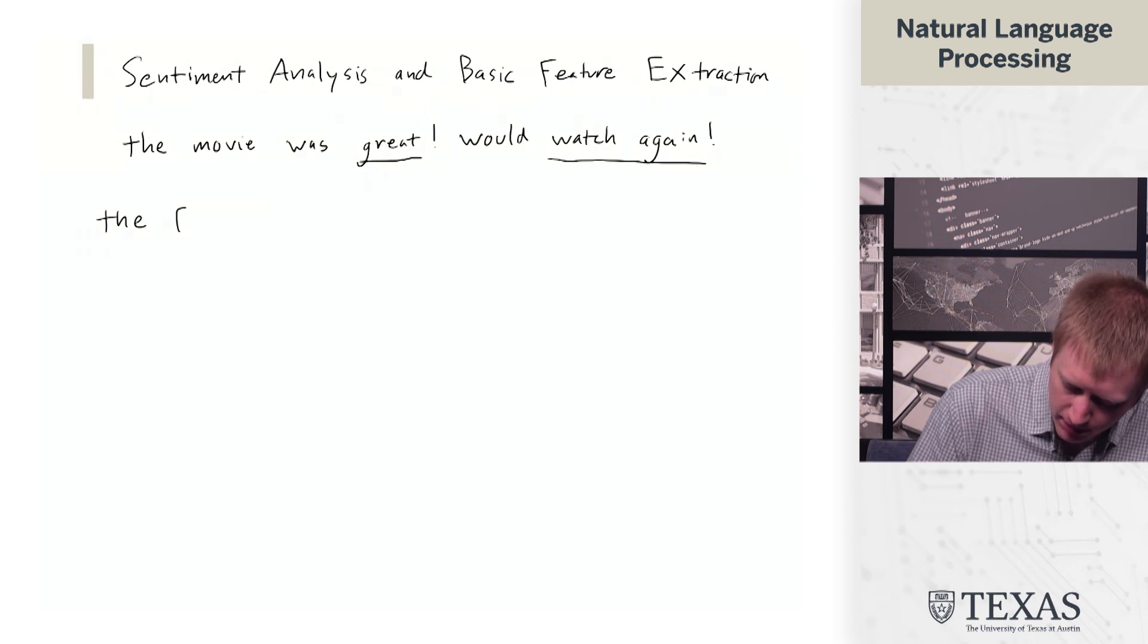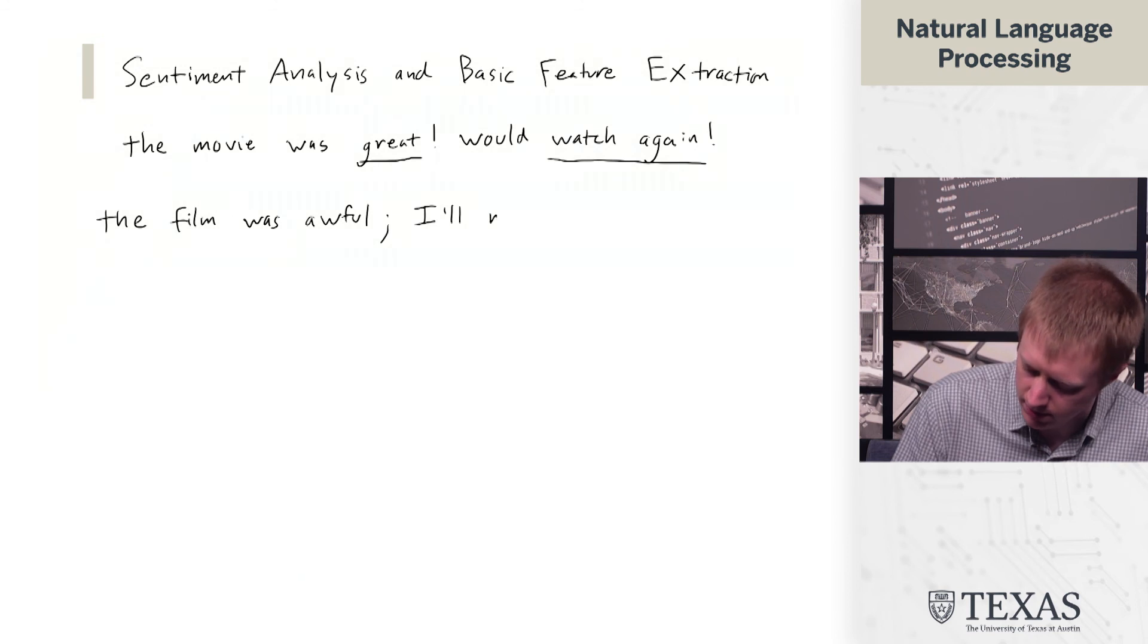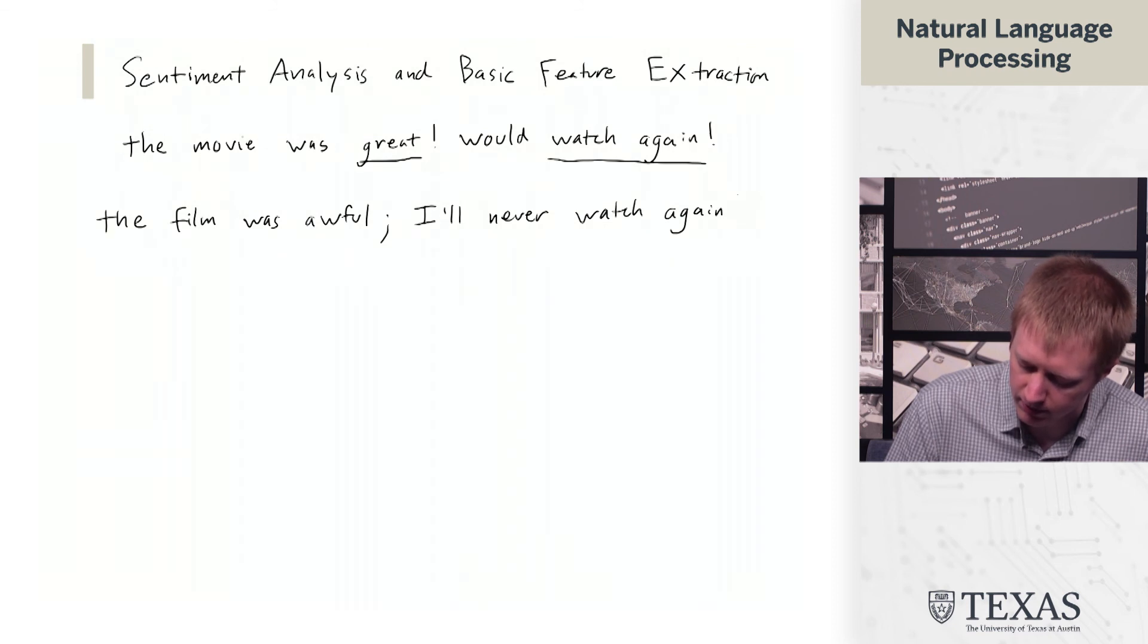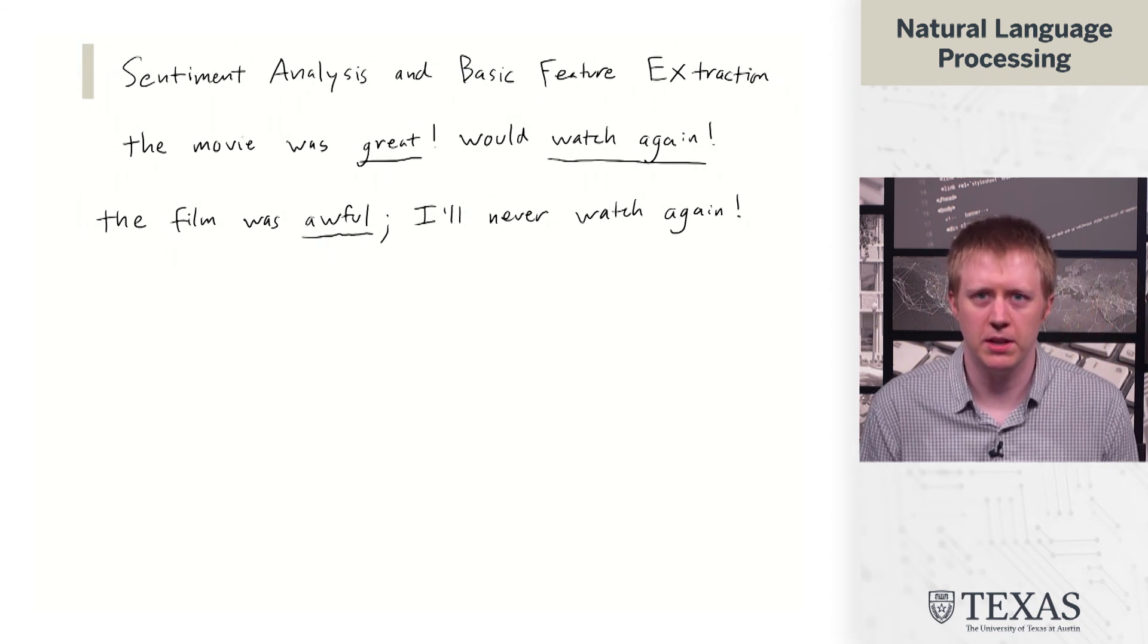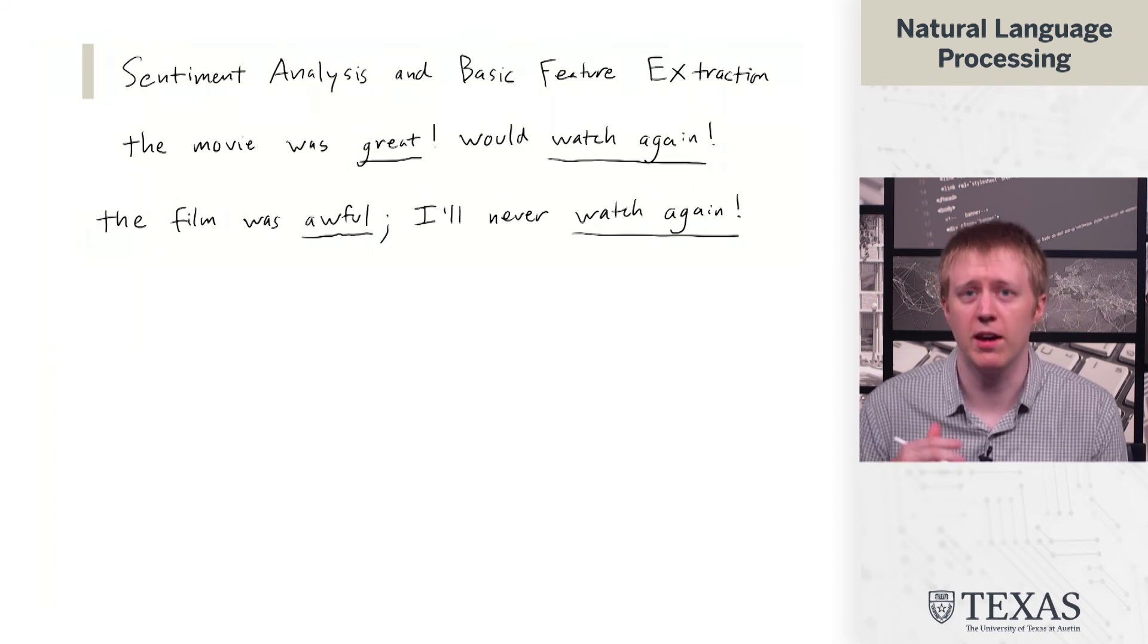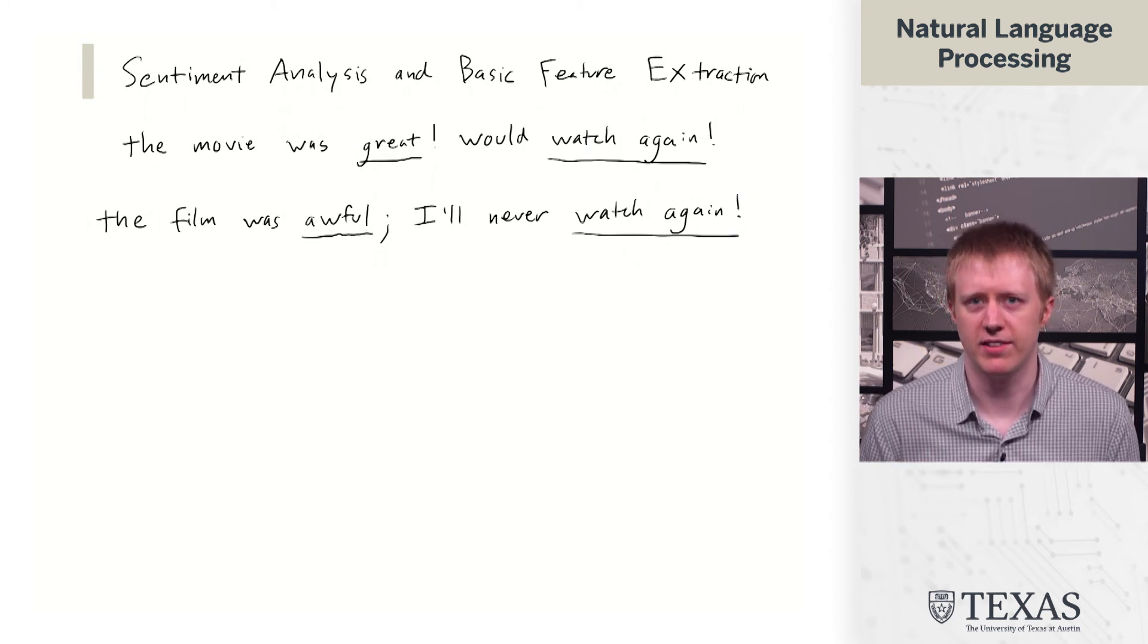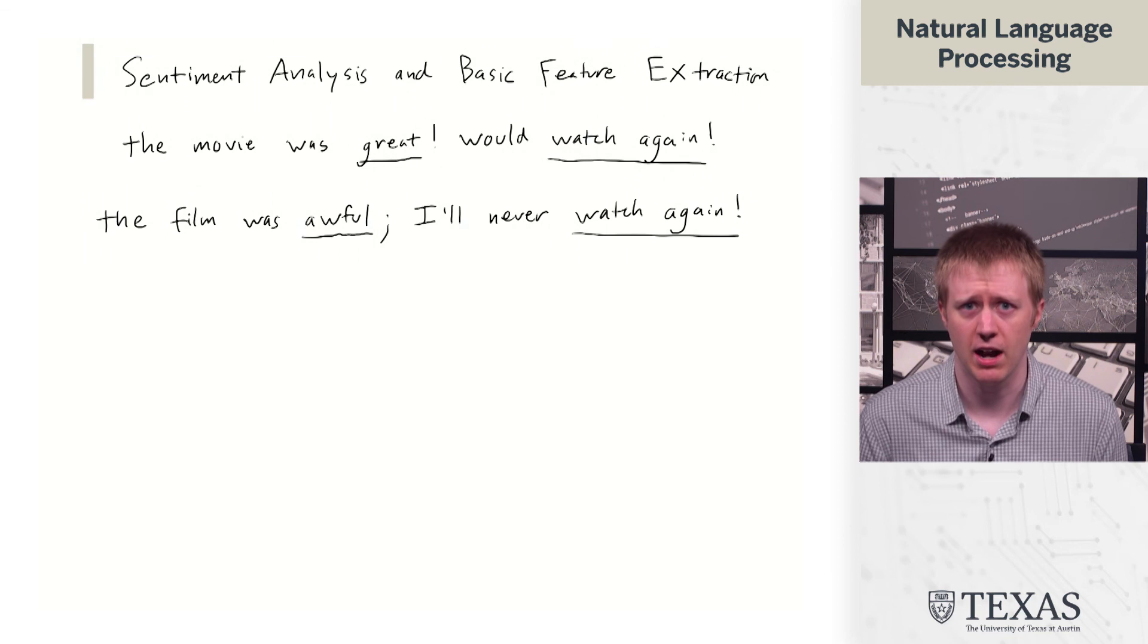So another example. The film was awful. I'll never watch again. In this case, this example is conveying negative sentiment. We see the word awful, and interestingly, we see this pair of words, watch again. But this case, we're saying we'll never watch again. So this kind of indicates a little bit about why this task is going to be complicated, because we're going to have to think about factors like negation, and kind of higher level structure, and how they impact things.